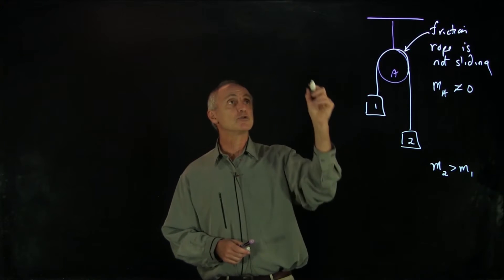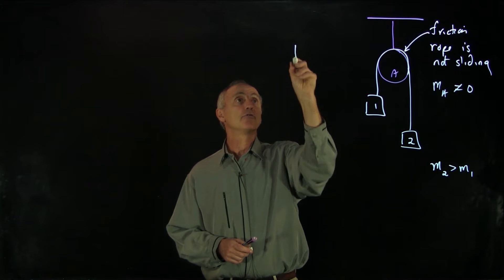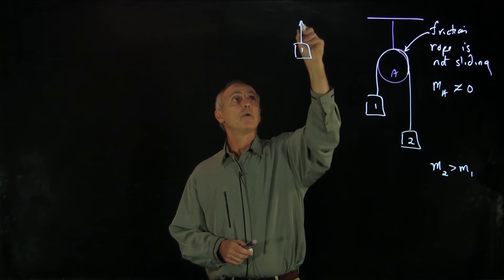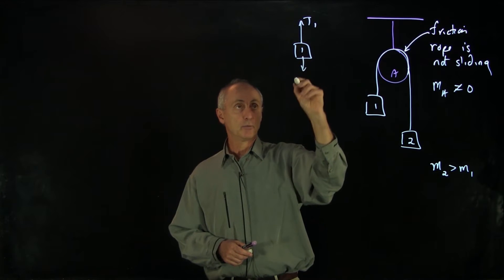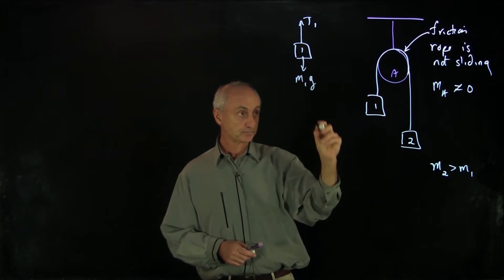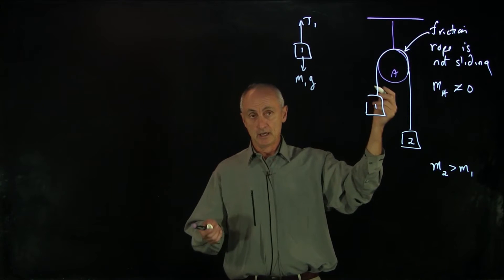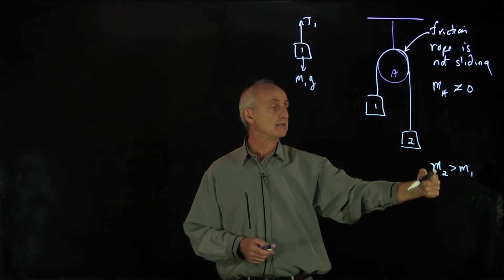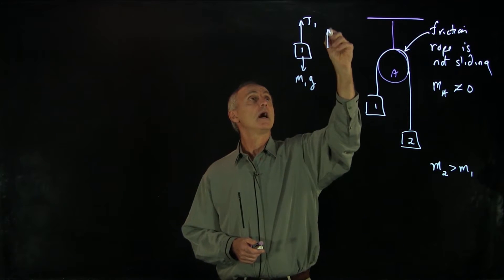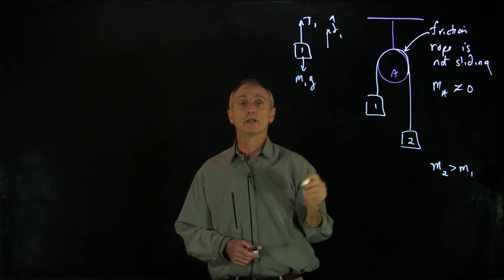Let's begin by drawing our free body diagrams for object one. We have tension in the rope pulling object one up. We have the gravitational force down. Because I have this idea that M2 is bigger than M1, I'm just going to choose j hat one up.